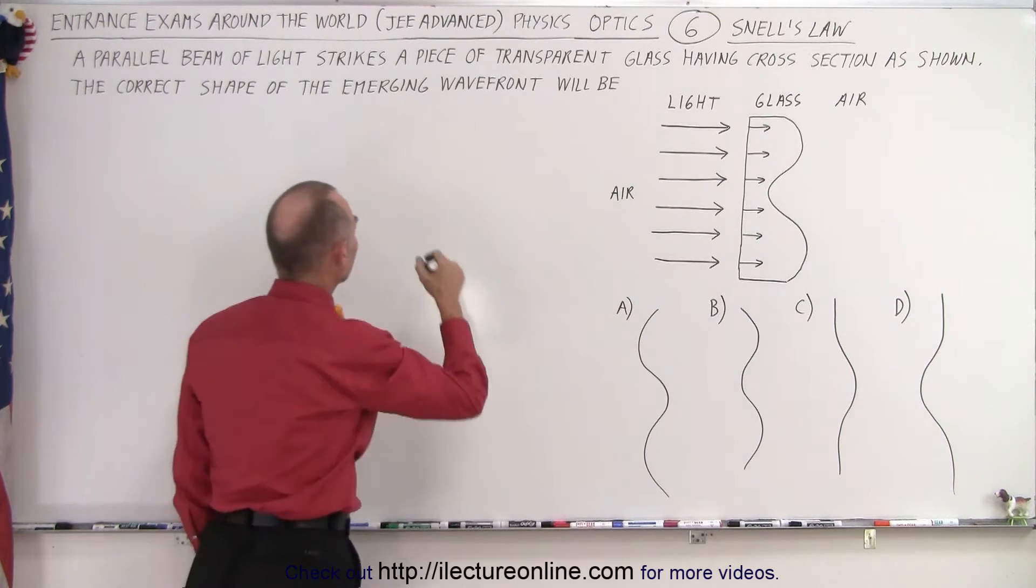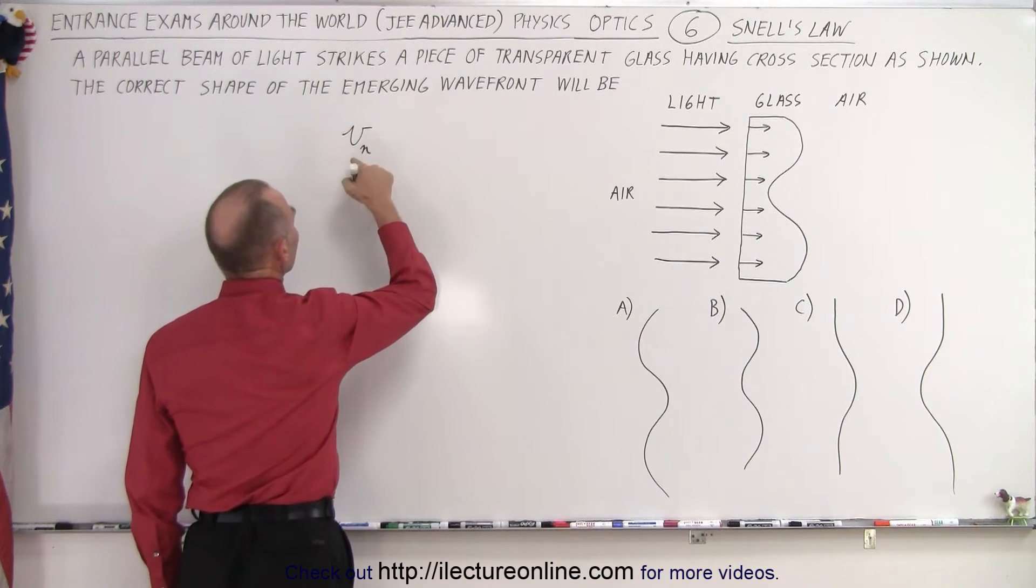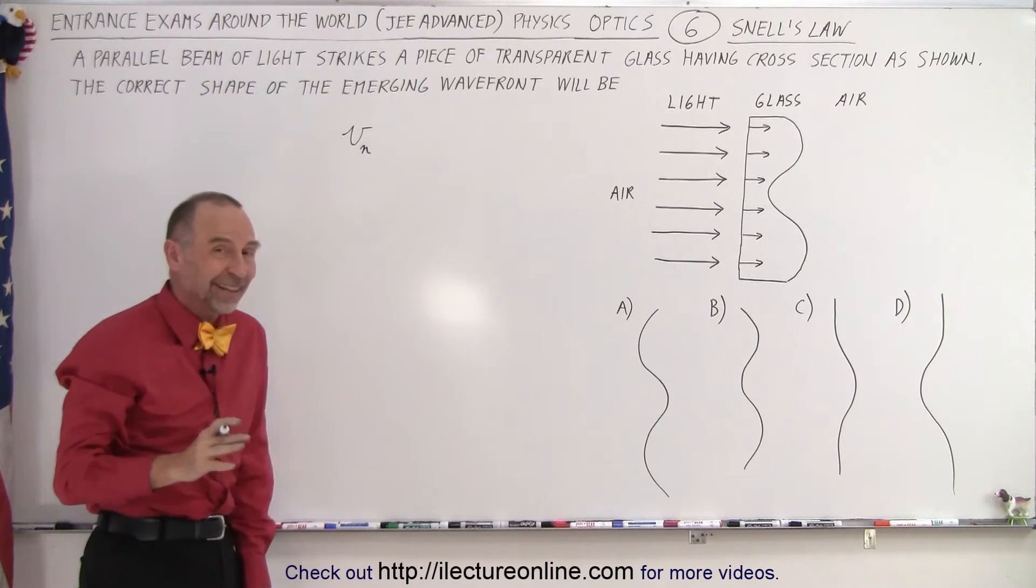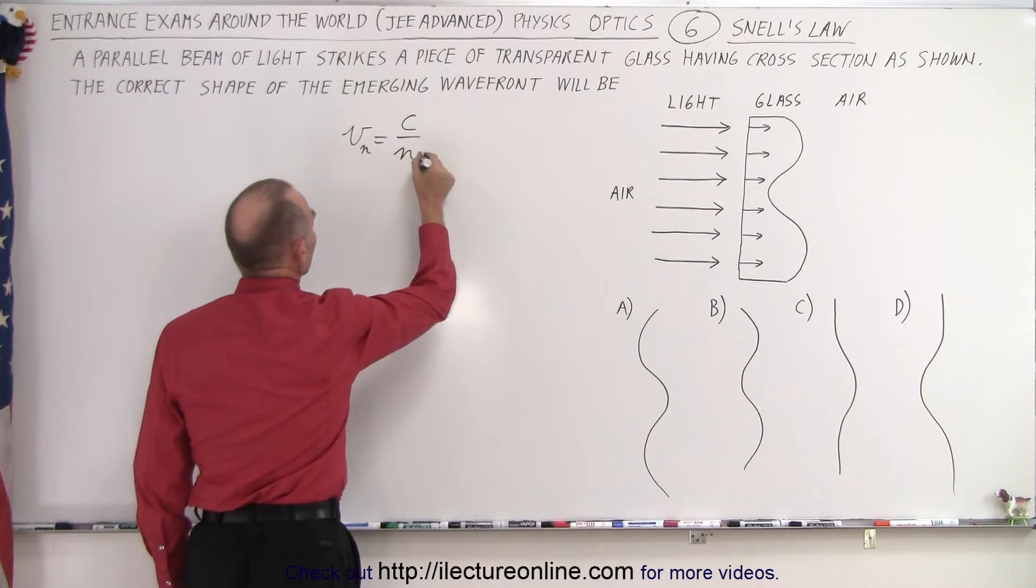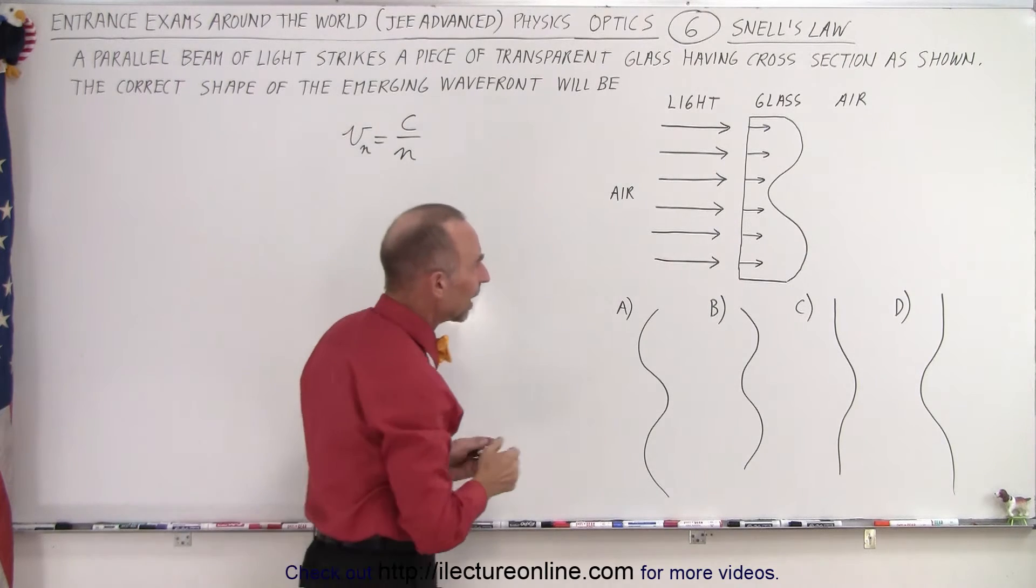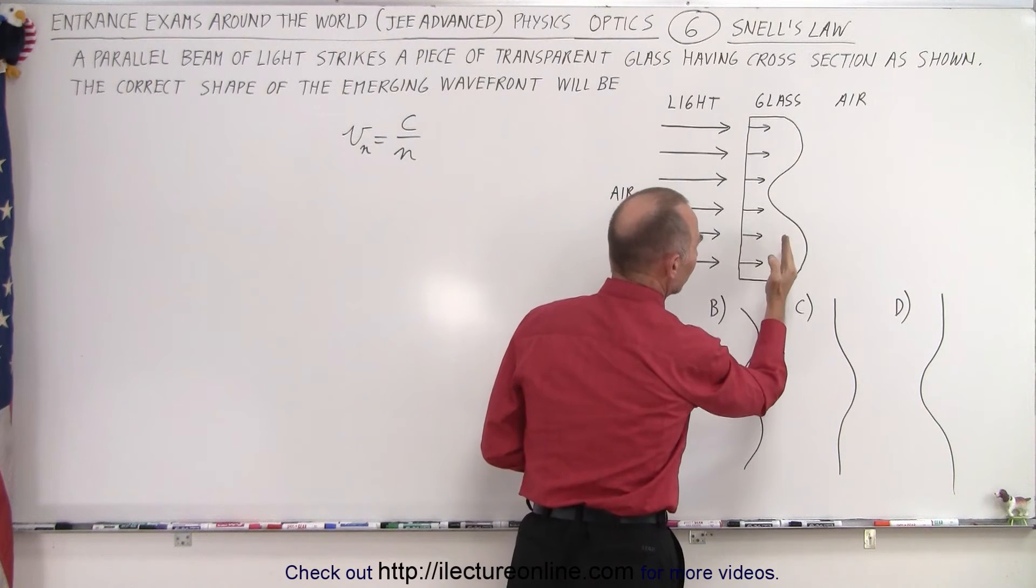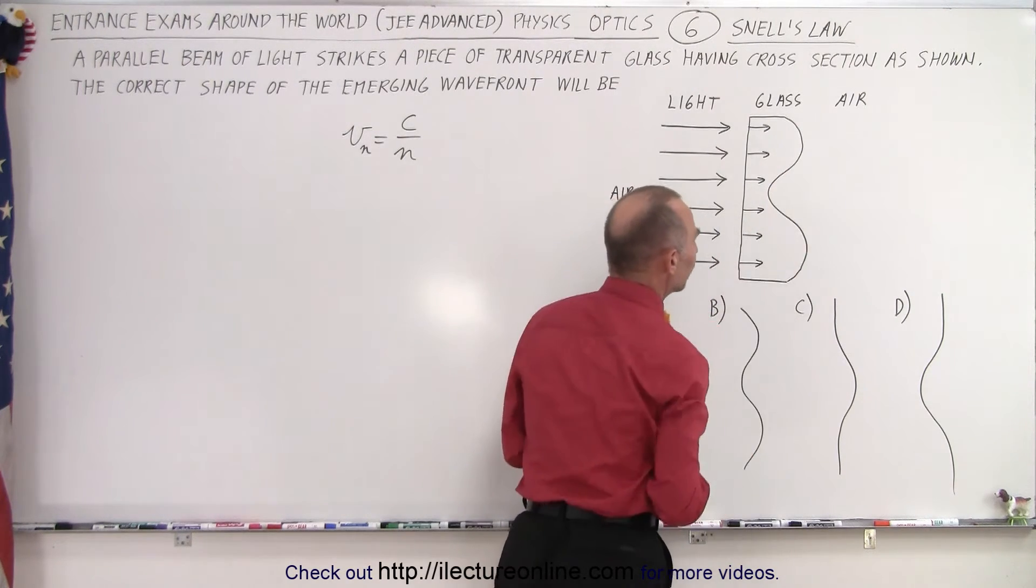We also know that the velocity inside the medium that has an index of refraction different from air is equal to the speed of light divided by the index of refraction, which means that the light traveling through the glass will travel slower than the light traveling through air.